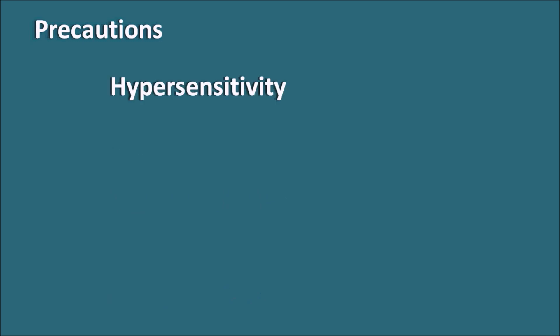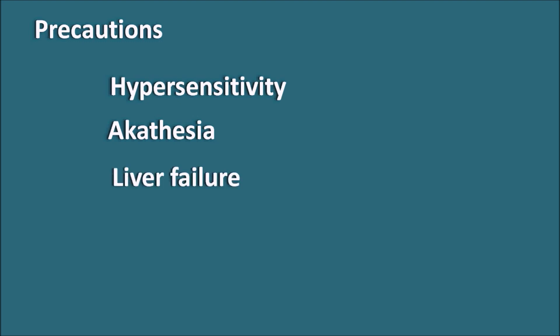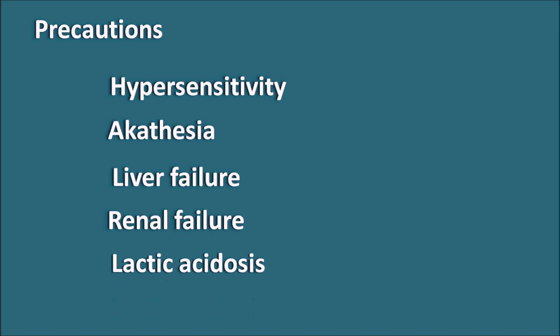Precautions: one of the important precautions is hypersensitivity — if a patient shows any hypersensitivity reactions, the drug should be changed to another anxiolytic. Akathisia, which is restlessness, is particularly caused by antagonism at the D2 receptors. Akathisia initially increases and may later decrease, but if it does not decrease and is continuously observed, drug usage may need to be discontinued. Liver failure and renal failure decrease the clearance of buspirone and may increase its toxicity, so the dose should be adjusted. Lactic acidosis, particularly observed in diabetes mellitus, may also increase the toxicity of buspirone.